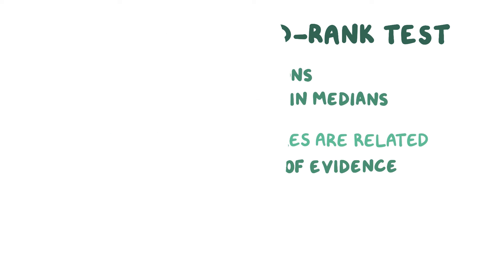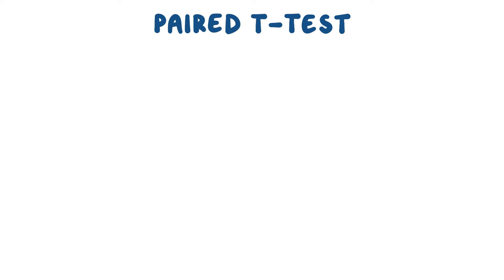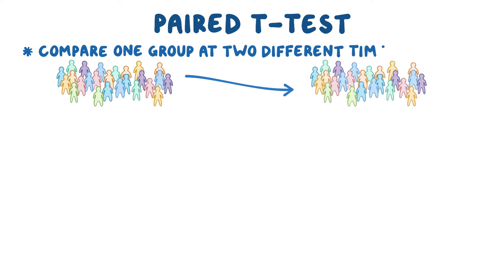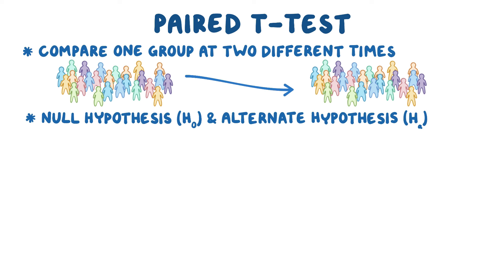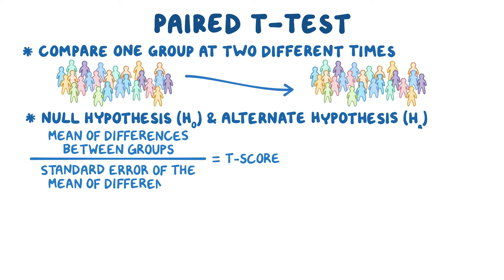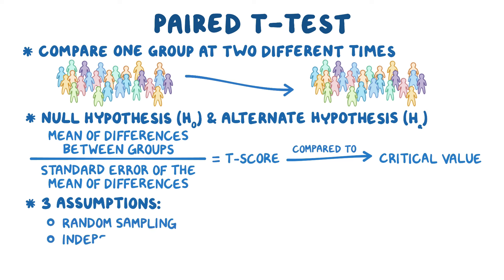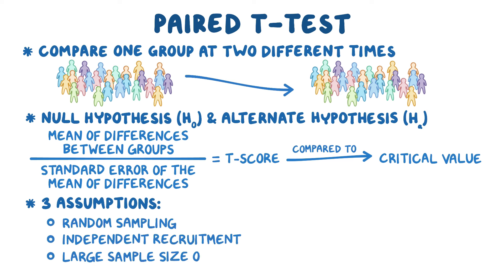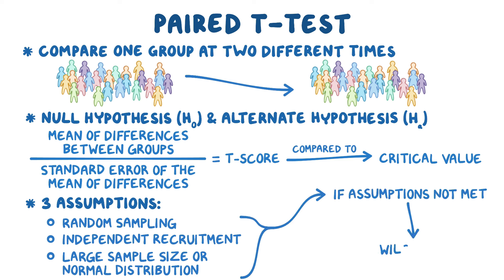As a quick recap: paired t-tests are a type of parametric test used to compare one group of individuals at two different times. Each t-test has a null hypothesis and an alternate hypothesis, and to test these hypotheses we calculate a t-score by dividing the mean of the differences between the groups by the standard error of the mean of the differences. This t-score can be compared to a critical value to determine if two variables are significantly related. The three assumptions — random sampling, independent recruitment, and large sample size or normal distribution — must be met to complete a t-test. If they are not met, the Wilcoxon signed rank test can be used instead.